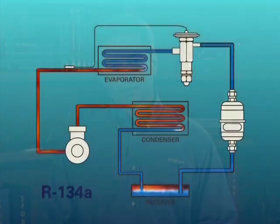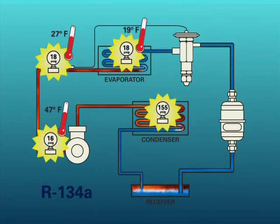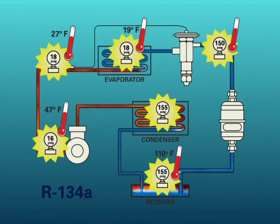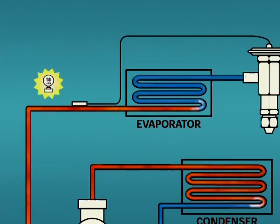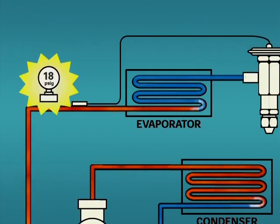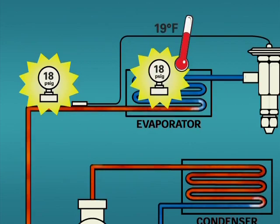Now that we understand the basic principles of the PT relationship, let's start to analyze a system for superheated, subcooled and saturated conditions. This system diagram shows some actual pressure temperature measurements of a normally operating system using refrigerant 134A. The measured pressure at the evaporator coil outlet is 18 PSIG. Assuming there is minimal pressure drop in the evaporator coil, we will have an 18 PSIG pressure in the coil. 18 PSIG on the PT card indicates a temperature of 19 degrees Fahrenheit.